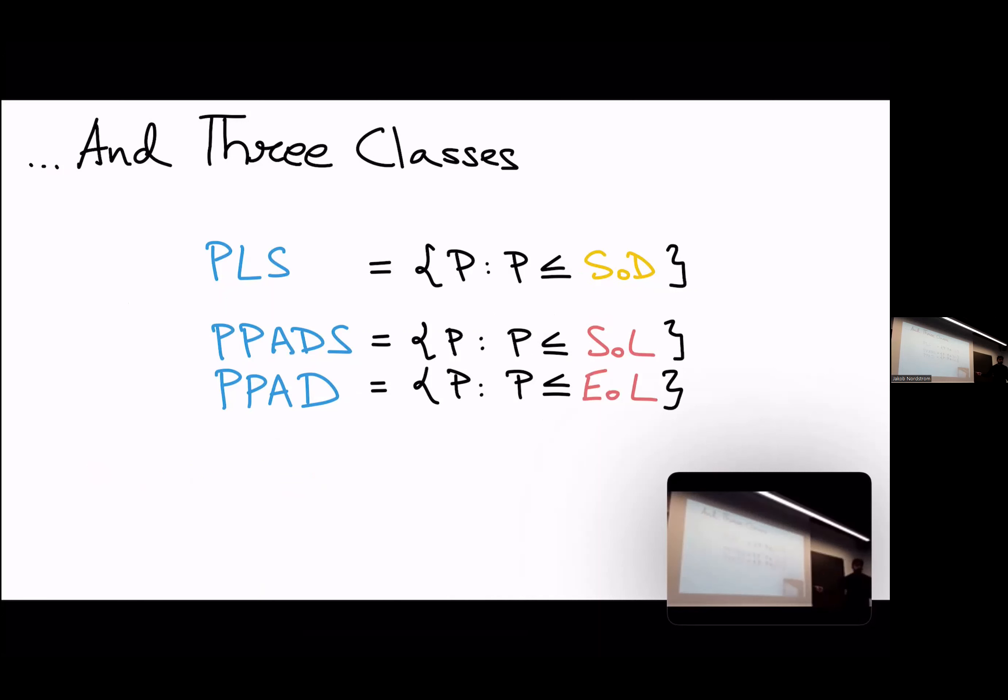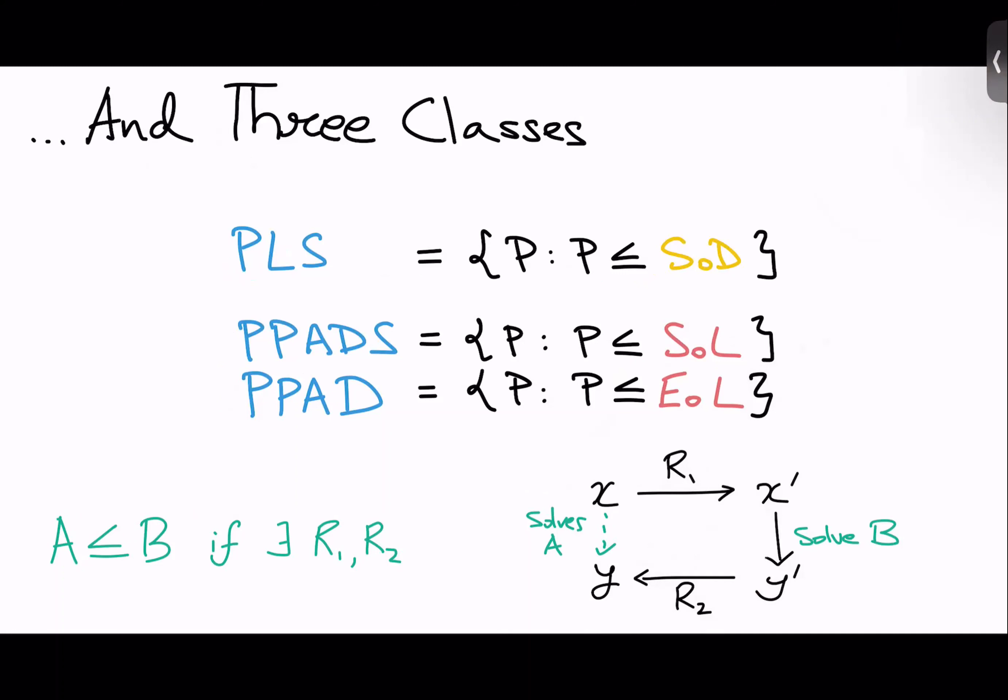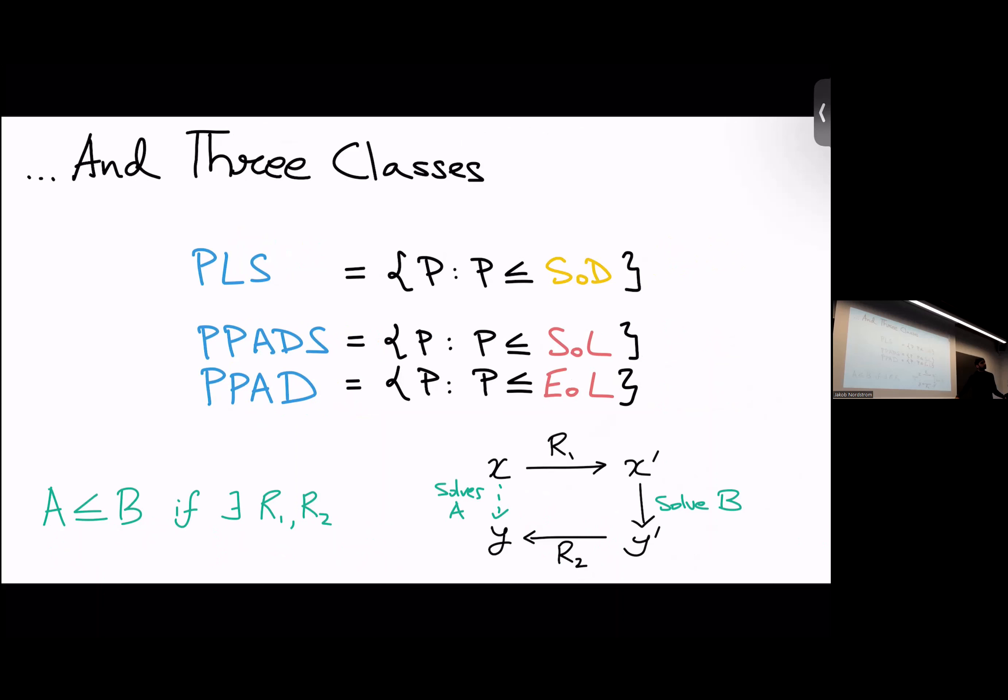Now that we have three problems, let's define three classes, which will just be by reduction to these problems. So PLS, polynomial local search, is all relations reducible to sink of DAG. PPAD, polynomial parity argument directive, is all relations reducible to end of line.